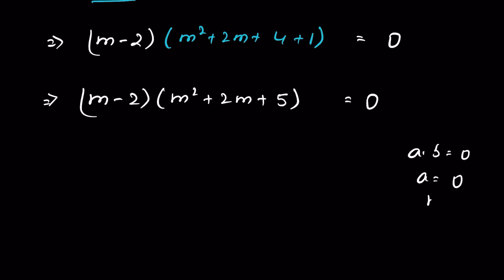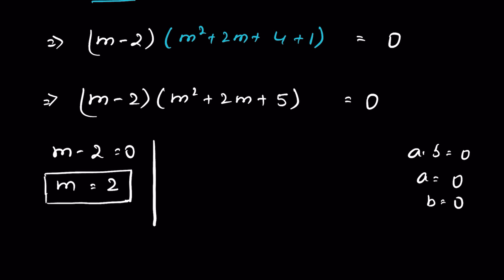Now when a times b equals 0, then either a equals 0 or b equals 0. So the first solution is m minus 2 equals 0, which gives m equals 2. The second factor is m² plus 2m plus 5 equals 0, which is a quadratic equation.